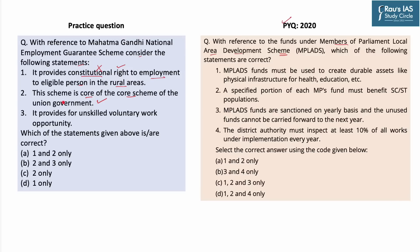The third statement says it provides for unskilled voluntary work opportunities — this is correct. It provides unskilled labor, it is voluntary in nature (not forced or mandatory), and it is an opportunity — the government will not conduct door-to-door surveys asking people to come. It is an opportunity available to eligible candidates in rural India. Based on this discussion, the answer to this question is option B, and the answer to the UPSC's previous year question would be option D — that is, statements 1, 2, and 4 are correct.